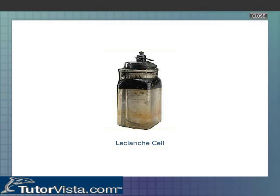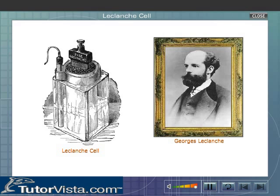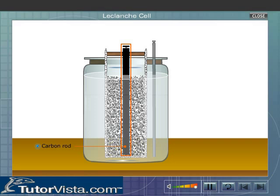Georges Leclanché constructed the Leclanché cell in 1865. In this cell, a carbon rod is placed in a porous pot containing a mixture of manganese dioxide (MnO2) and powdered carbon, along with an amalgamated zinc rod.